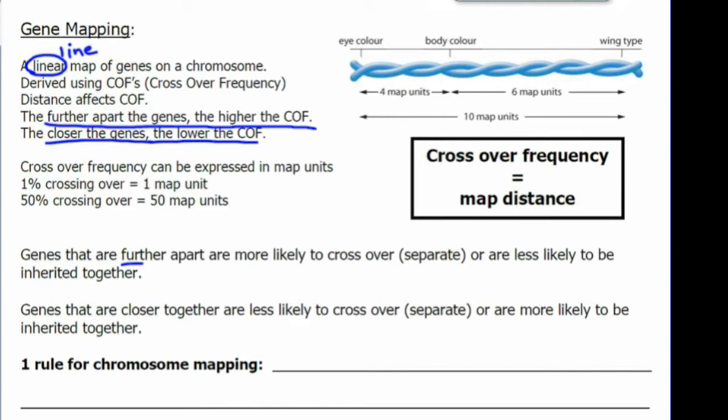Genes that are further apart are more likely to cross over or separate or are less likely to be linked or inherited together in the same gamete. Genes that are closer together are less likely to cross over or separate or are more likely to be inherited together.